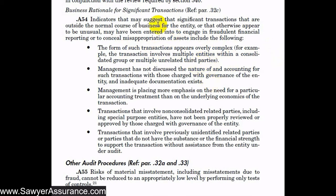Another signal of an unusual transaction is that the board was not told about it or did not approve it — meaning it was done without authorization. Additionally, if management places more emphasis on the need for a particular accounting treatment rather than the underlying economics of the transaction — focusing on form over substance — that is a warning sign. Transactions involving non-consolidated related parties, including special purpose entities, that have not been properly reviewed or approved by those charged with governance — where money might be paid to related parties without the board's knowledge — are also concerning.